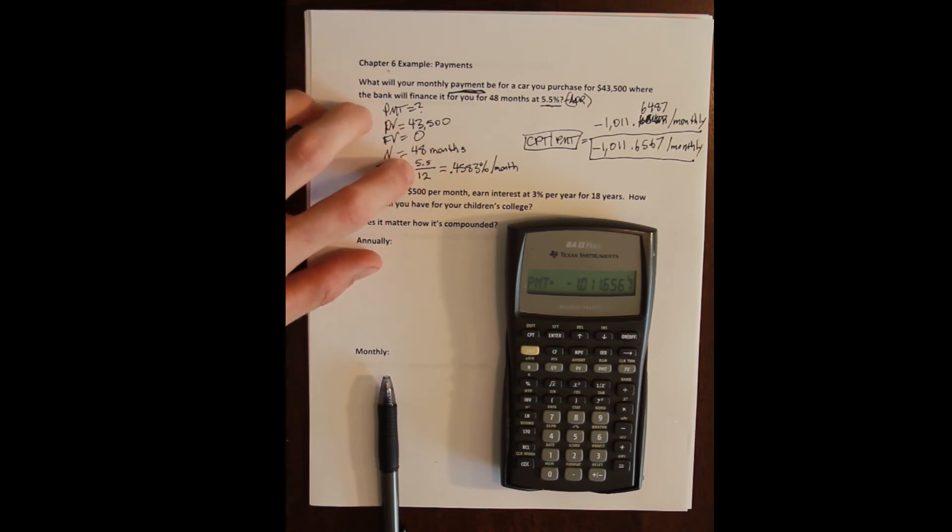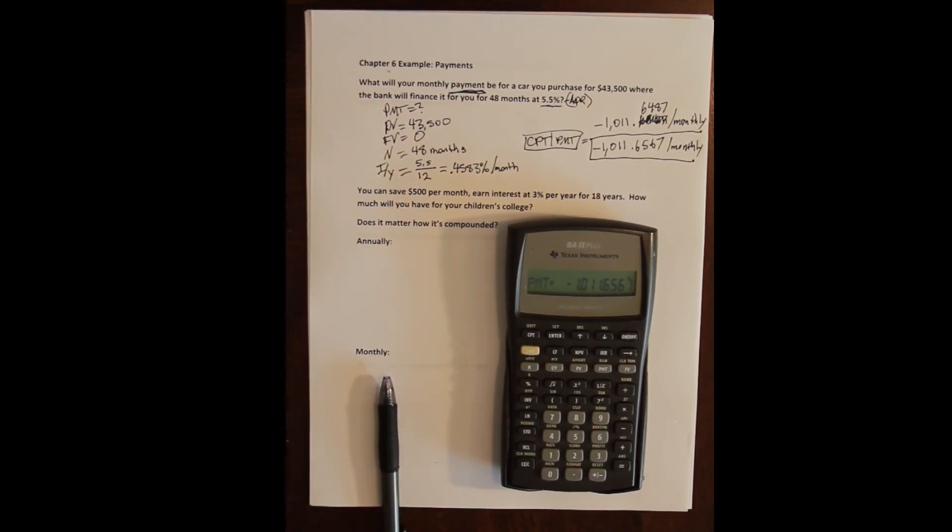So you don't have to do this separately. You can enter five point five divided by twelve. If the N was four years you could also enter four times twelve as your N and that would give you forty eight months and the calculator accepts those formula answers as inputs.